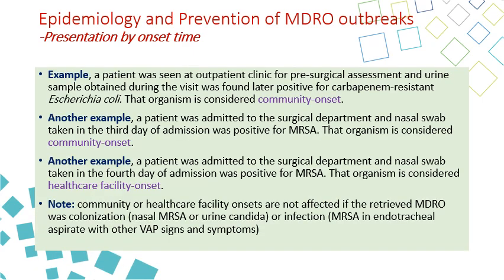For example, a patient in an outpatient clinic whose urine tests positive for carbapenem-resistant E. coli is considered community onset, because any outpatient sample is community. A nasal swab taken on the third day of admission is also community onset, since it falls within the first three days. The same organism MRSA detected from a nasal swab on the fourth day is healthcare onset, since it's outside the first three days. Note that whether the MDRO represents colonization or infection does not affect the community or healthcare classification.